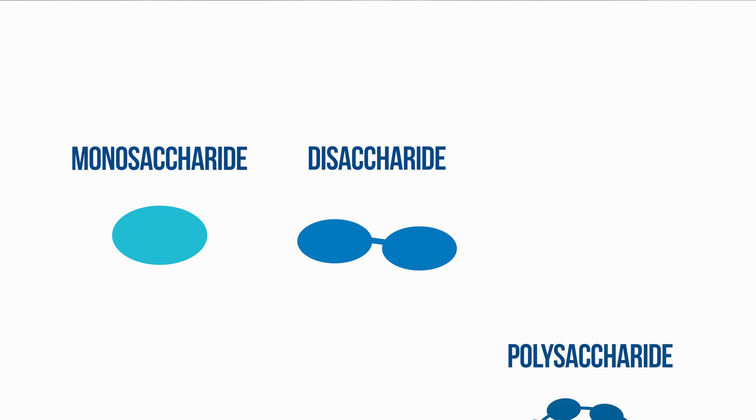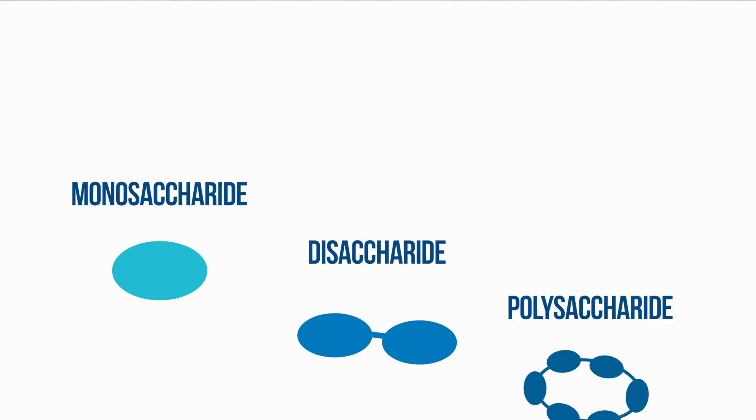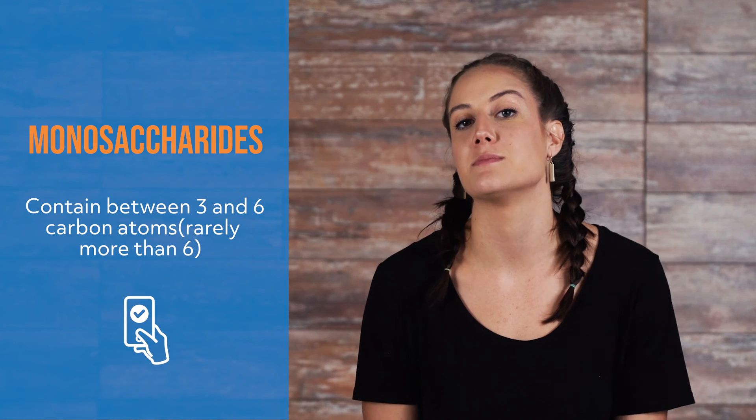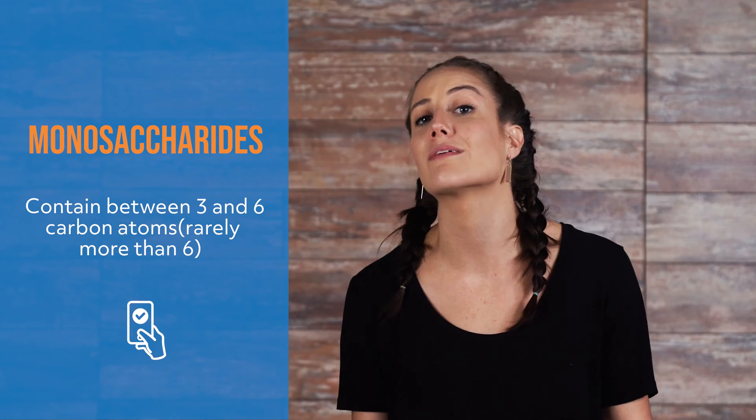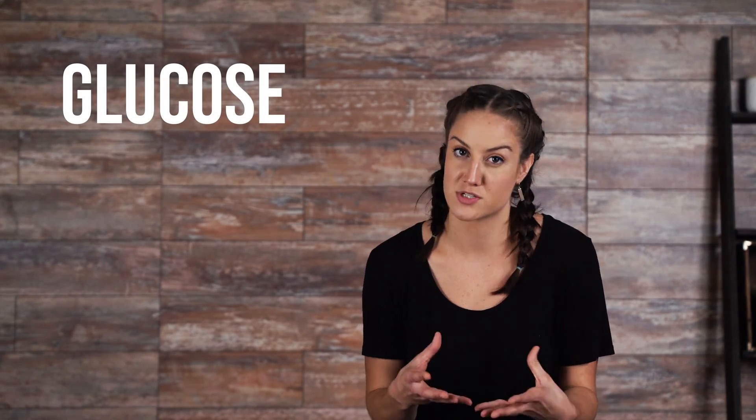Carbohydrates are made up of carbon, hydrogen, and oxygen. There are three classes of carbohydrates: monosaccharides, disaccharides, and polysaccharides. Monosaccharides are the most basic form of a carbohydrate and cannot be further broken down into simpler sugars. They are distinguished by the amount of carbon atoms they contain, between three and rarely more than six. Monosaccharides usable for living organisms include glucose, the most common, galactose, and fructose.